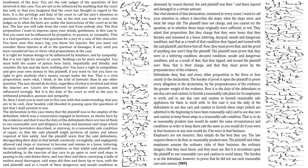The plaintiff must prove that they were in a tortured condition, decayed condition, unsafe and dangerous condition, and as a result of that condition, that they tipped and turned the plaintiff over. Now, that is their charge, and that they must prove by the preponderance of the evidence. Defendants deny that, and every other proposition in the three or four counts in the declaration. The burden of proof is upon the plaintiff to prove every allegation in the declaration by the preponderance of the evidence, the greater weight of the evidence.